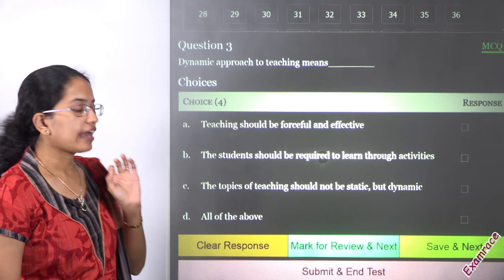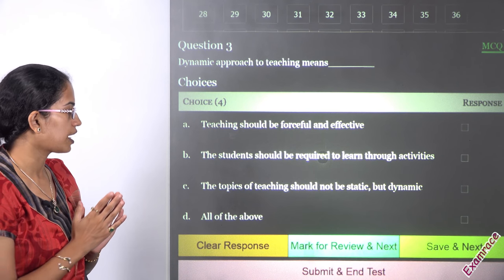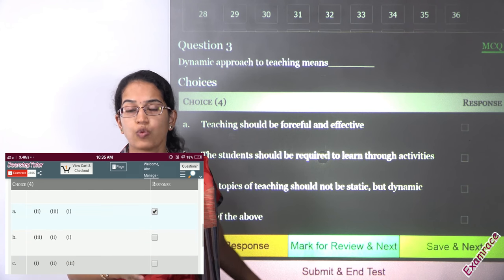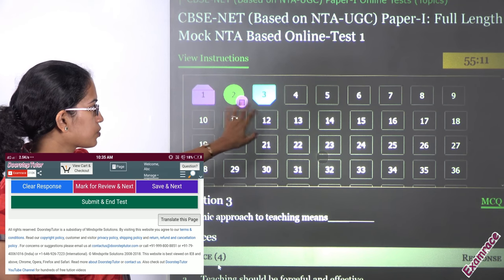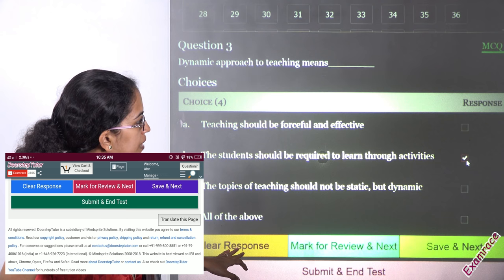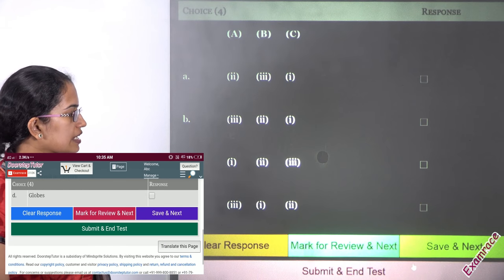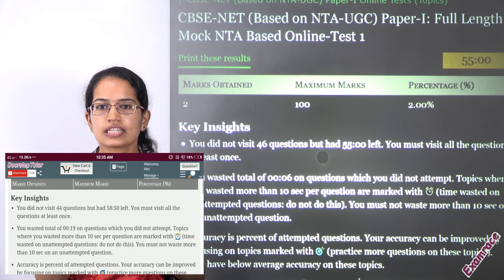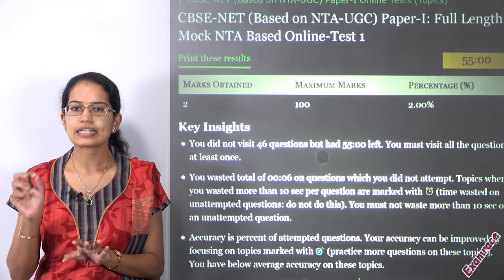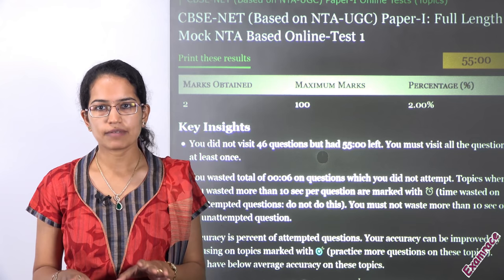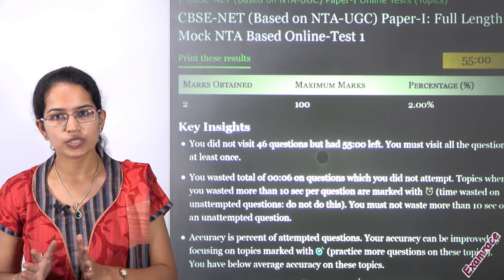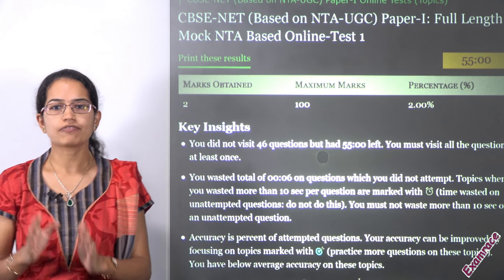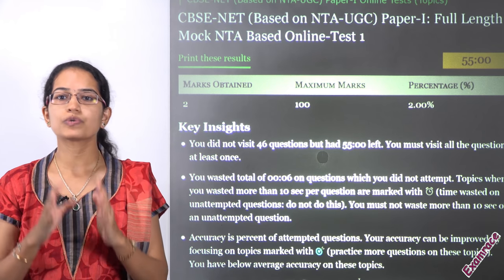Something very important I have seen in numerous students through our online session programs: students simply click 'Submit' by mistake. For example, after attempting two questions, while working on the third question, instead of clicking 'Save and Next,' by mistake they click 'Submit and End Test.' What happens is the test is over — there is no chance to go back. Whatever number of questions you attempted are the only ones that go for evaluation. There is no method to go back and retake the test, so practice on the dummy module so that for the real NTA examination you are well prepared.